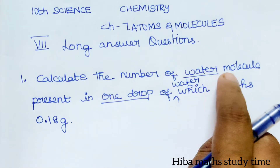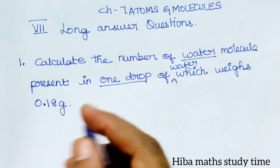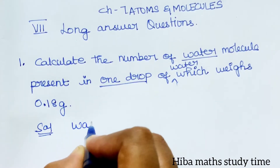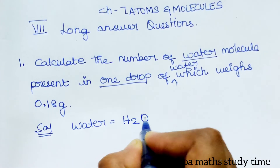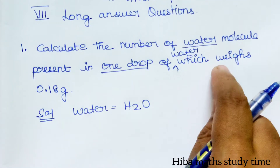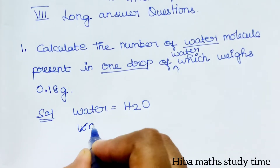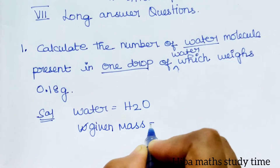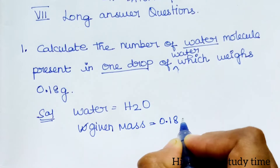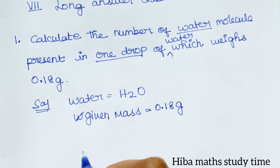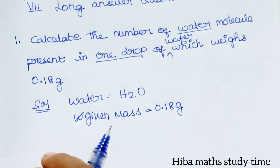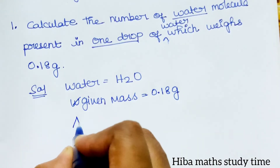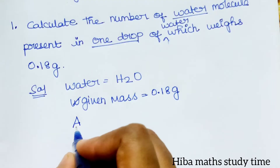We need to calculate the number of water molecules. A water molecule is H₂O. The given mass is 0.18 gram. We need to find the number of water molecules present in one drop of water, so the formula for water is H₂O and the given mass is 0.18 gram.